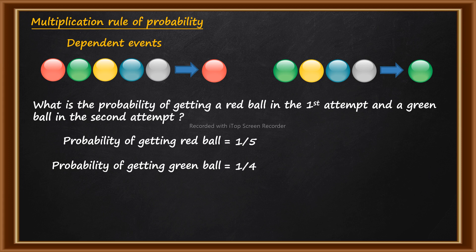Out of these four balls, in the second attempt we have to choose the green ball. There is one green ball, but now we choose out of four balls instead of five. The probability of getting the green ball is affected by our previous attempt — so these events are dependent. The probability of getting the green ball is 1 by 4. So the total probability is 1 by 5 into 1 by 4, which equals 1 by 20.